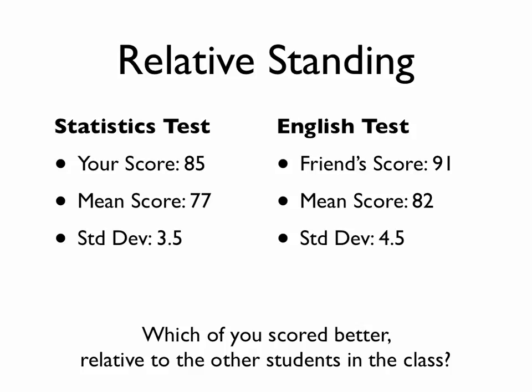The standard deviation for the English test is larger, which means there's more spread, more variation in the scores. So it's perhaps more likely that your friend would score as far away from the mean as you did. Another way to answer this is: how many standard deviation units away from the mean is your score versus your friend's? Your score of 85 is more than 2 standard deviations above the mean. Your friend's score of 91 is exactly 2 standard deviations. So that gives us an answer — you scored better, more than 2 standard deviations above the mean.